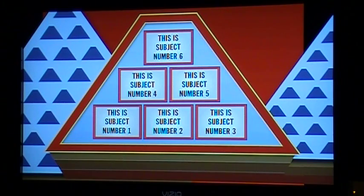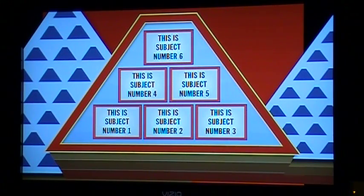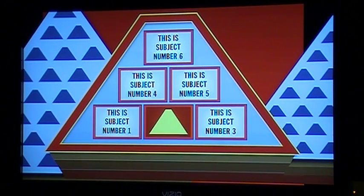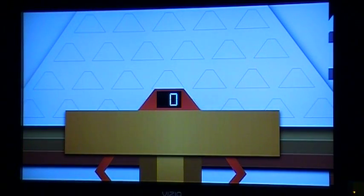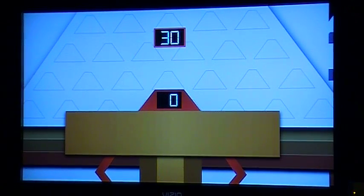And then when we actually get into it, the contestant will choose which subject they want. Let's go with subject number 2, which is not the 7-11. So, describe these things that are part of subject number 2 — things that are part of subject number 2. Ready? Go.